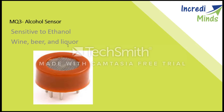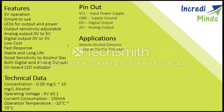Now we will look at the different features, technical data, and applications. It operates at 5 volts and is simple to use. We can use different types of LEDs to get output data and check the working of the sensor. Its output sensitivity is adjustable — you can maintain the sensitivity level of the sensor. It has both analog and digital output.